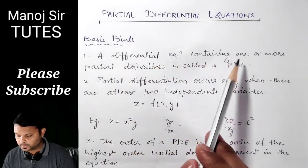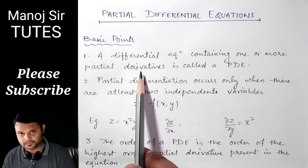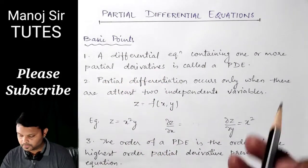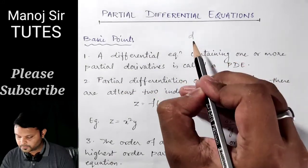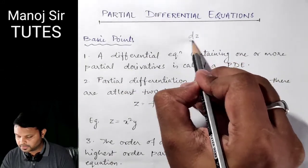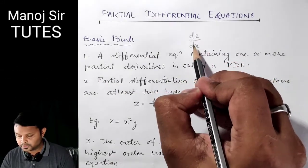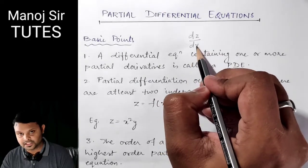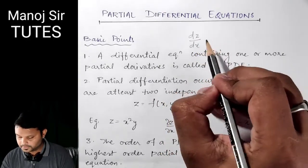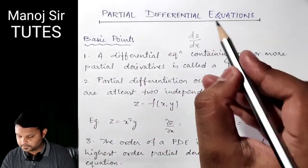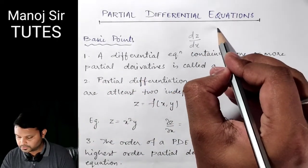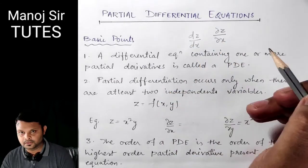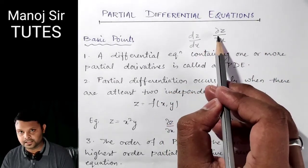A differential equation containing one or more partial derivatives. What is a derivative and what is a partial derivative? If somebody writes DZ upon DX, it means we are finding the derivative of Z with respect to X. But if we are using a partial derivative, we use this form: DEL Z upon DEL X — instead of D, we use DEL.